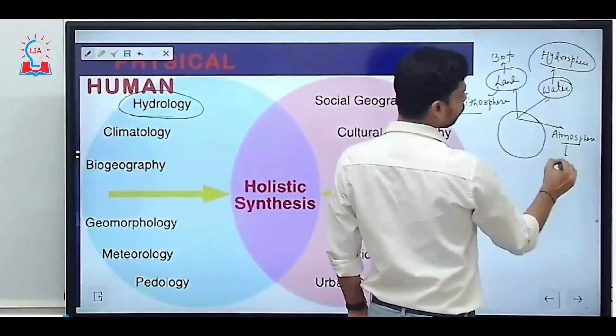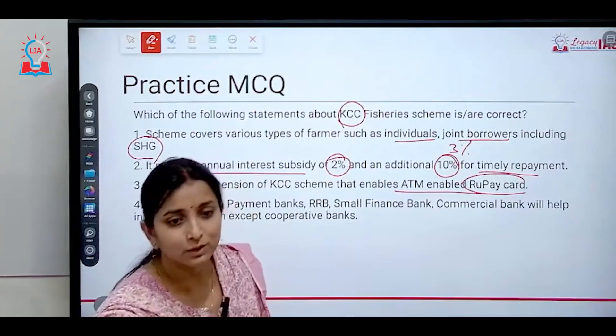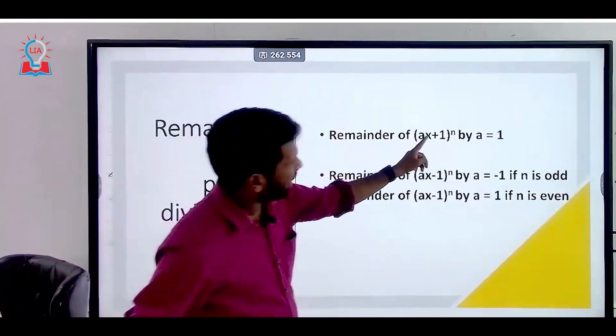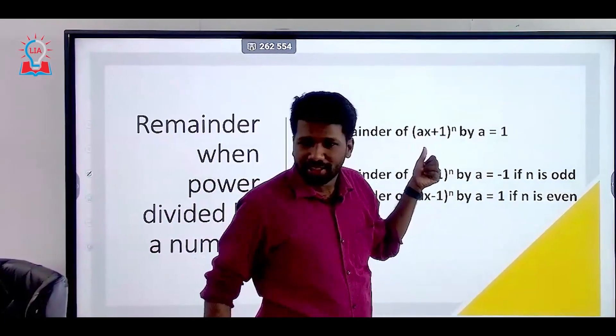And the loans will be credited to your account wherever you want. You can swipe this card. ax plus 1 divided by a, here 33 by 8, 33 is 32 plus 1.